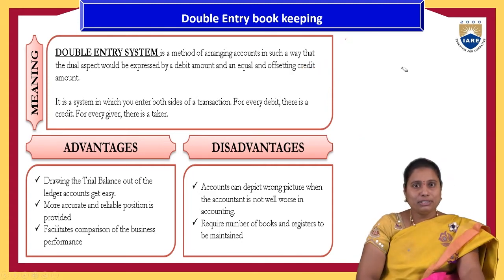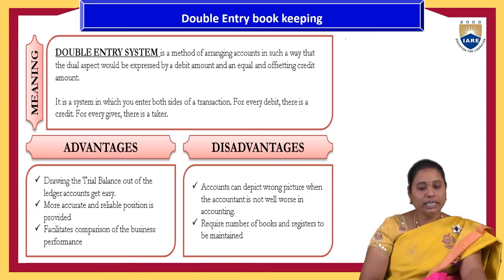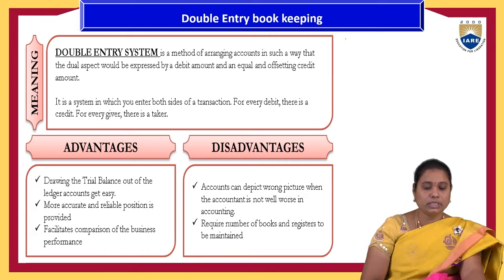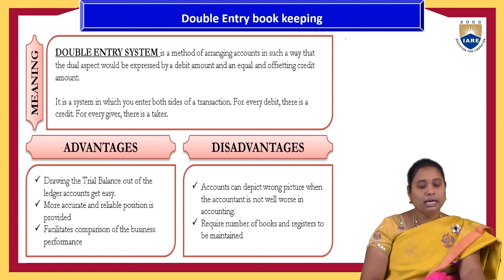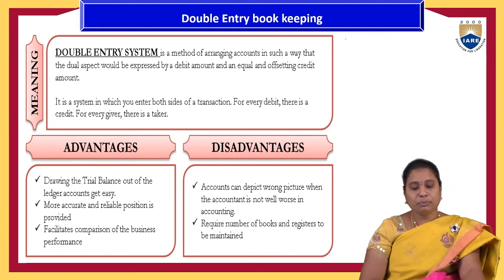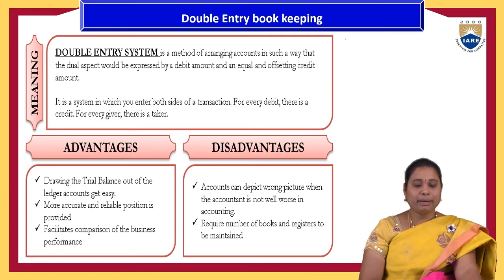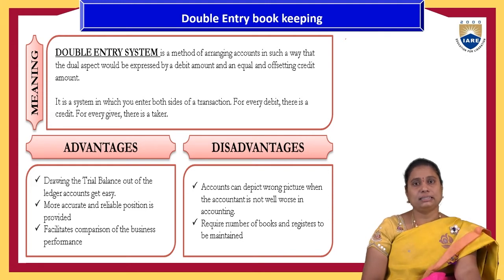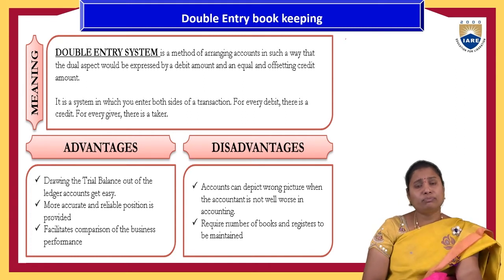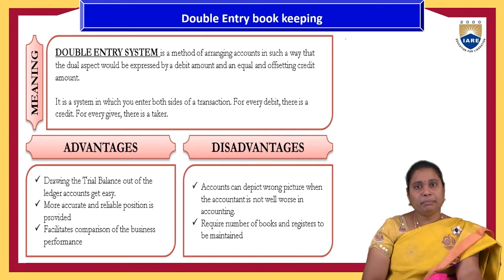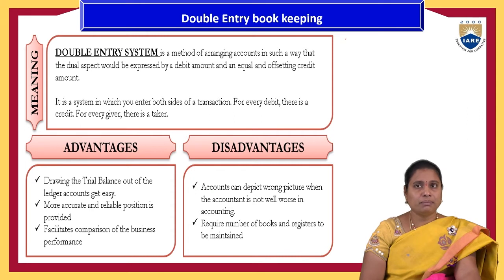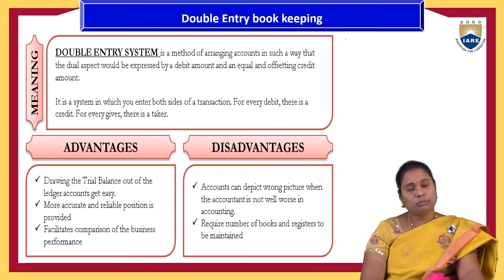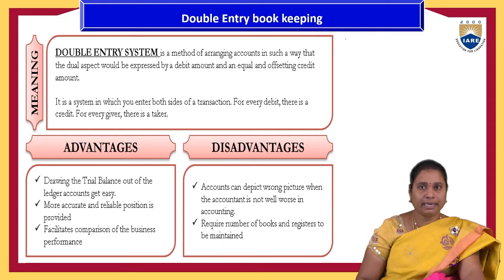The advantages of the double entry mechanism include the ability to draw a trial balance from ledger accounts, which is easy and provides more accurate and reliable positions. It also facilitates easy comparison of business performances. However, disadvantages exist as well: it requires a greater number of books and records, and a wrong picture may be depicted that cannot be easily identified. Despite these limitations, most advantages favor the double entry mechanism.